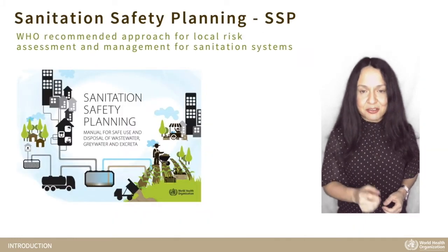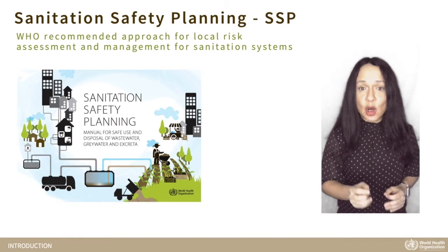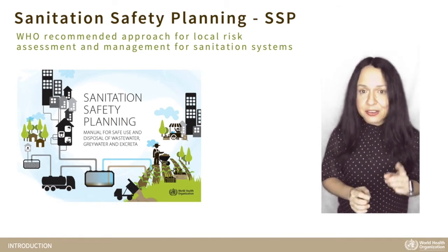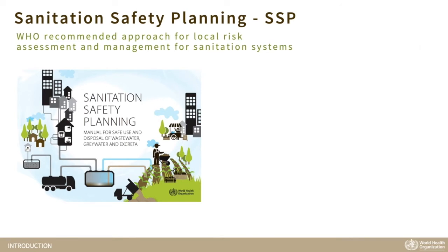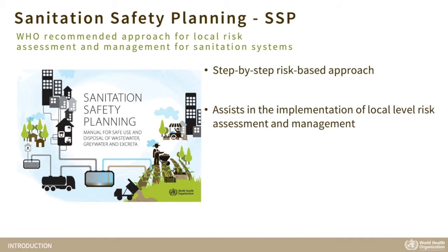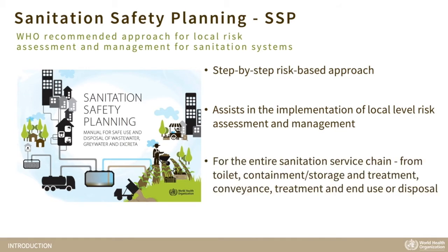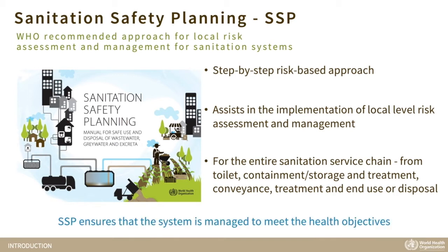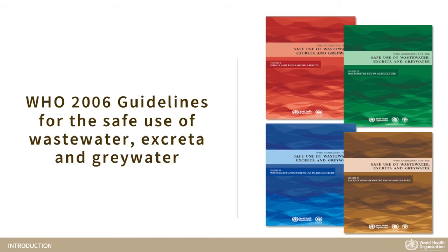We do this by applying Sanitation Safety Planning, or SSP. SSP is the WHO recommended approach for local health risk assessment and management for sanitation systems. It presents a step-by-step methodology to assist in the implementation of local level risk assessment and management for the entire sanitation service chain, and ensures that the system is managed to meet the health objectives. Originally published in 2015 to assist with the 2006 WHO Guidelines for Safe Reuse, the principles of SSP have since been adopted more widely and are now used as a health risk assessment method for the entire sanitation service chain.